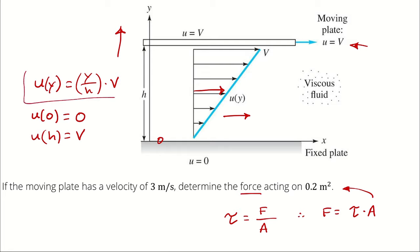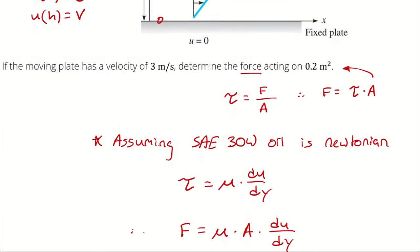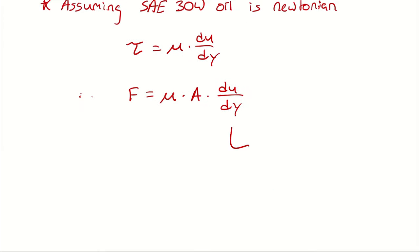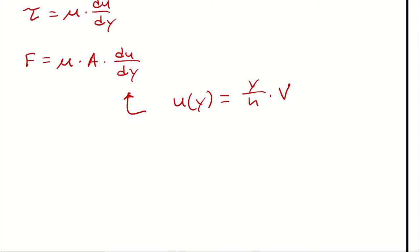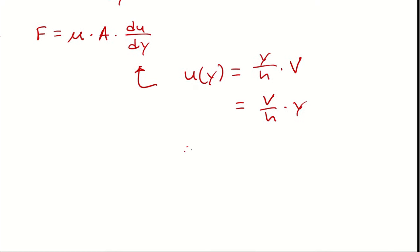So this is the function we are going to need to take the derivative of. So I'm saying u as a function of y is y over h times big V. And for convenience, I can write that as v over h times y. Therefore, du dy would just be the constant in front of y, which is v over h.